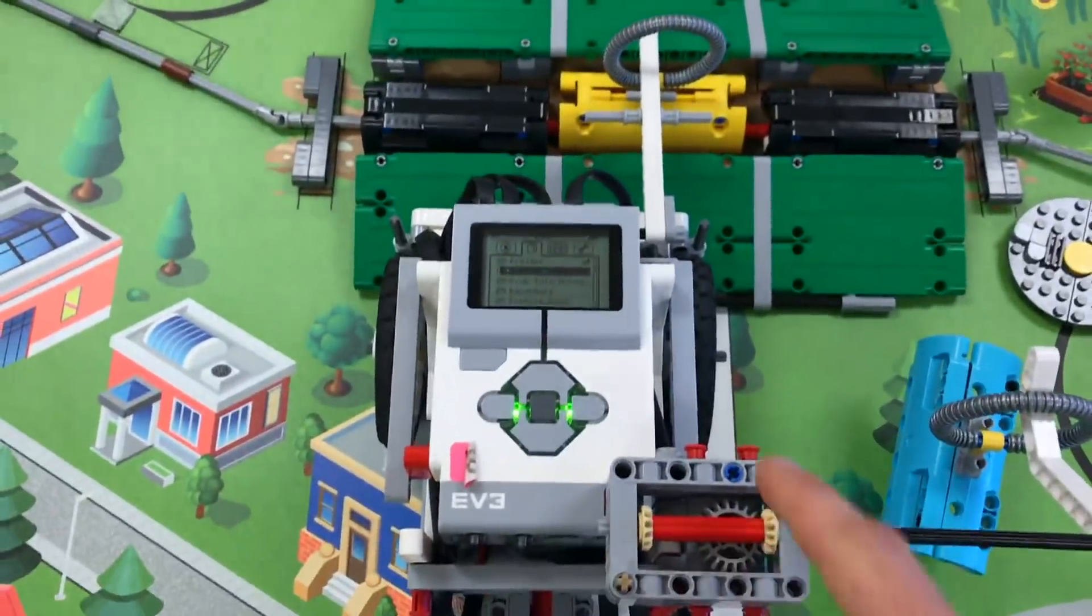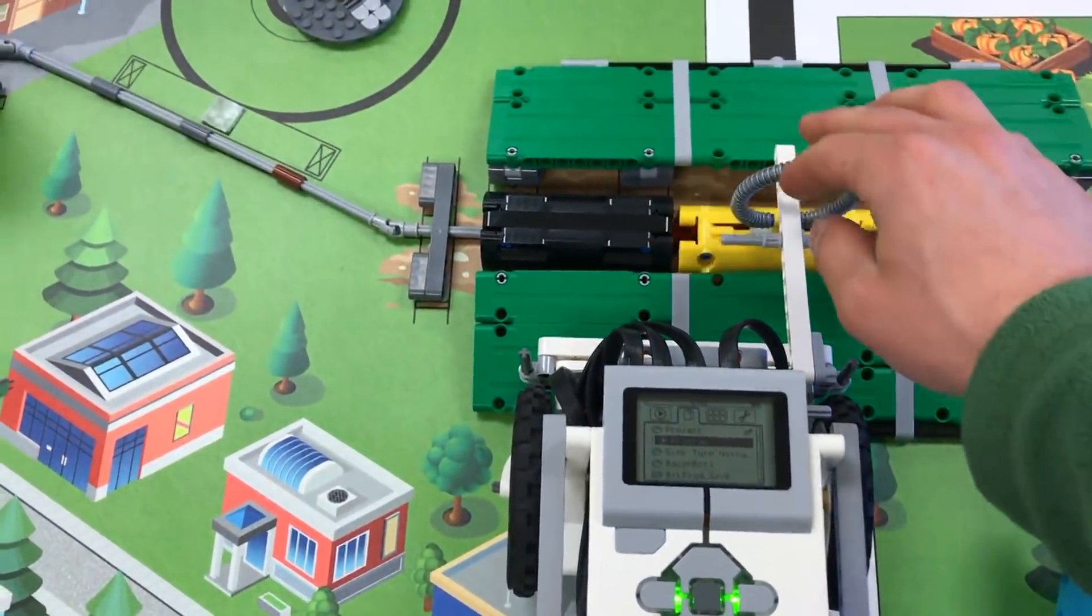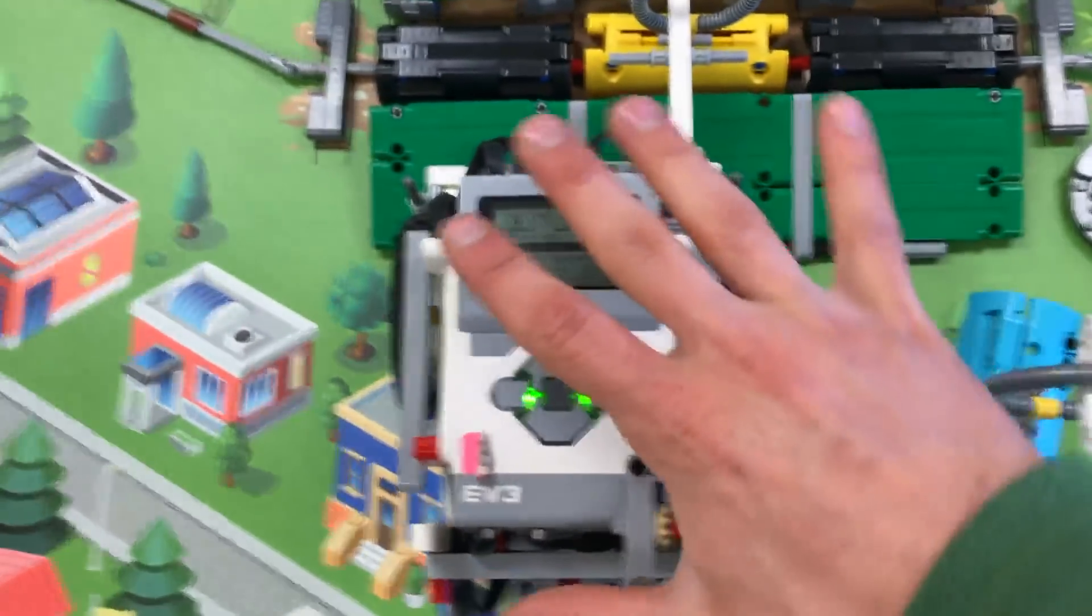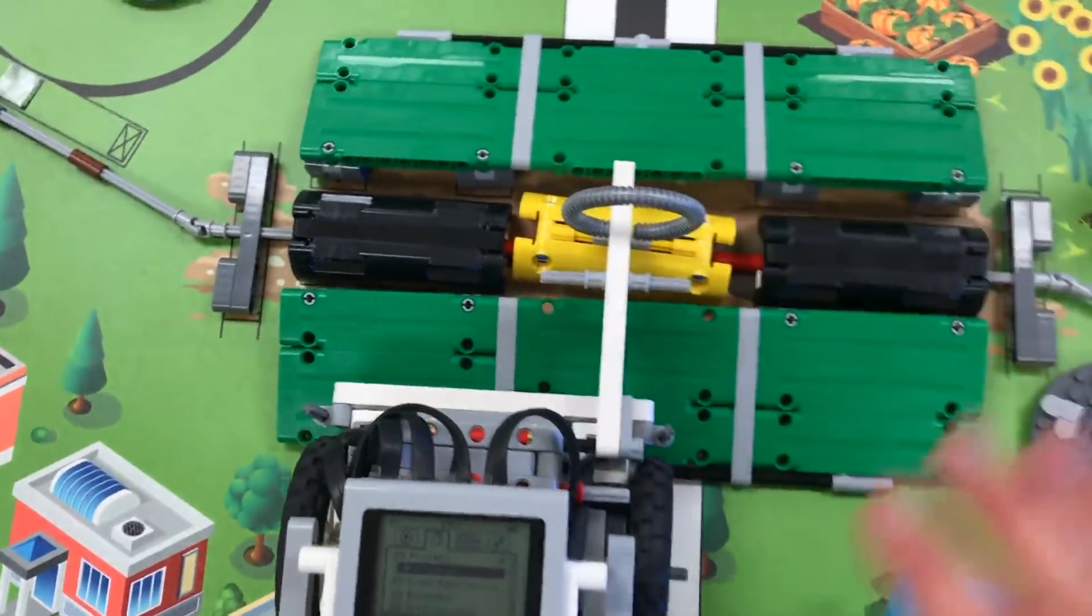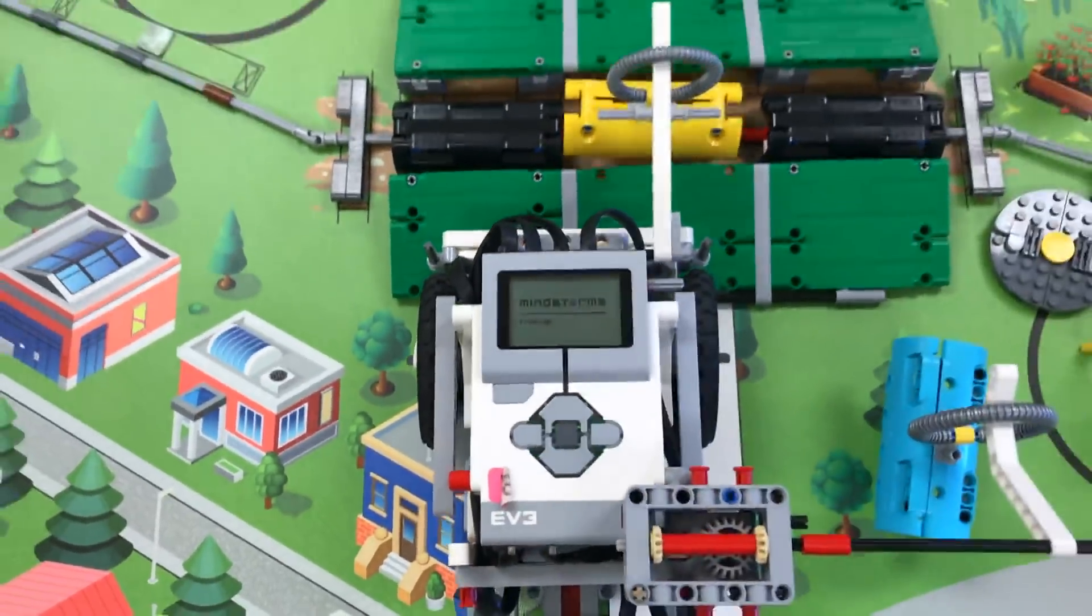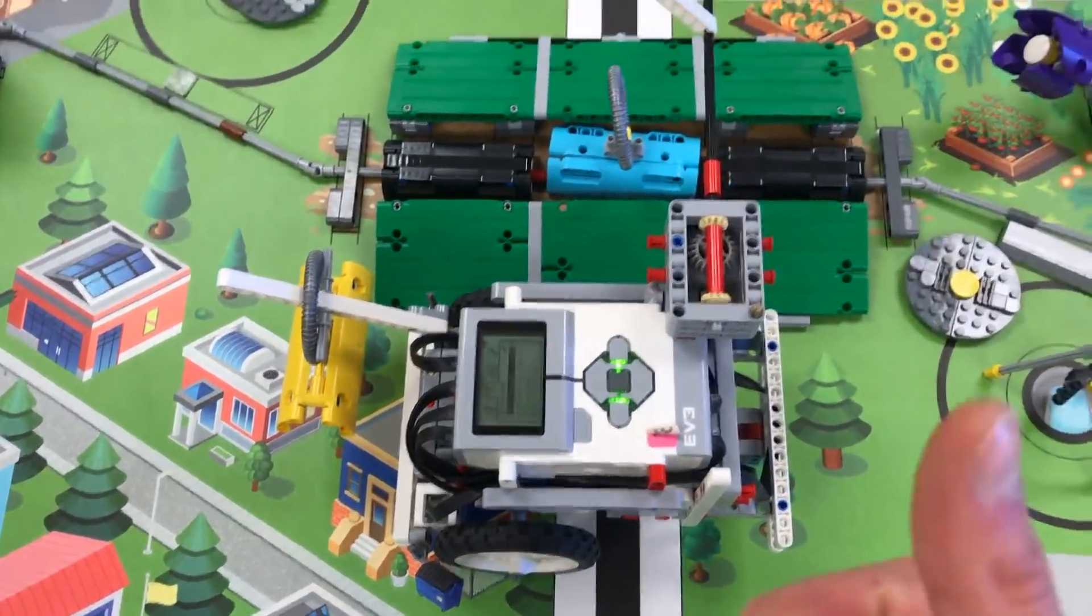Alright, so I've written a simple program for this arm to come up and pick up this broken yellow pipe, and then the robot to back up, turn 90 degrees so this blue pipe can be put back where the yellow pipe was. Let's see if it works. Great.